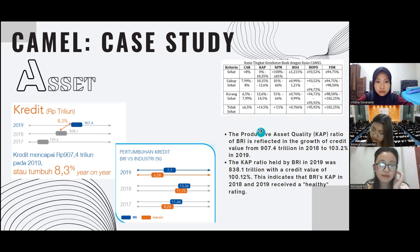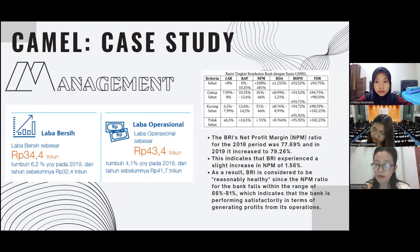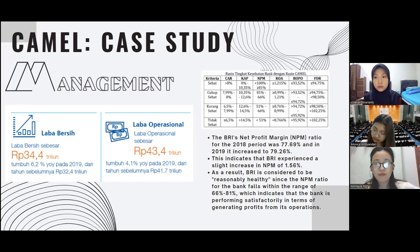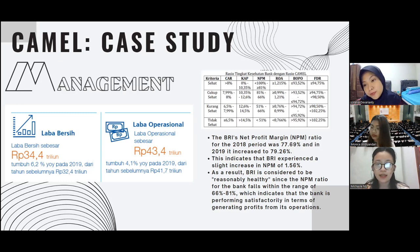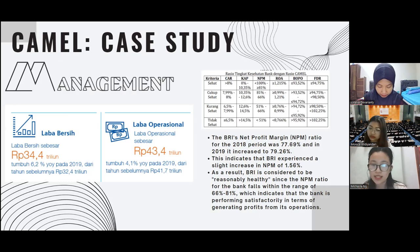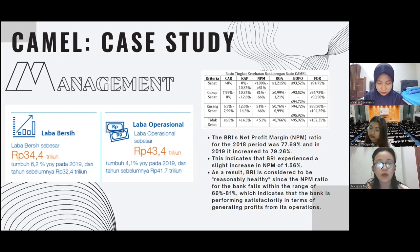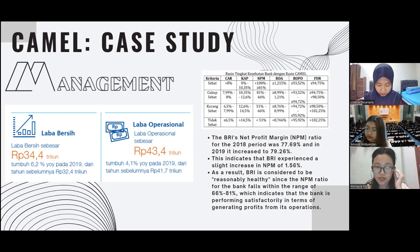For Management (M), if you recall, it divides net profit by operational income or revenue. In 2018, the NPM (Net Profit Margin) was 77%, and it increased to 79% in 2019, indicating an improvement of about 1.56%. As a result, BRI is considered reasonably healthy, since the NPM ratio falls within the range of 66% to 81%, indicating that the bank is performing satisfactorily in terms of generating profits from its operations.